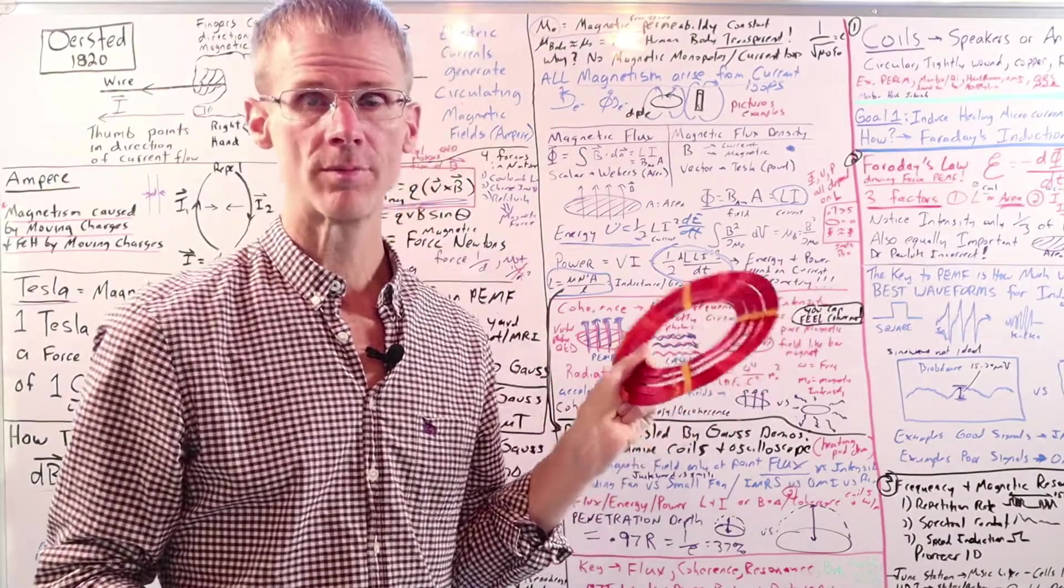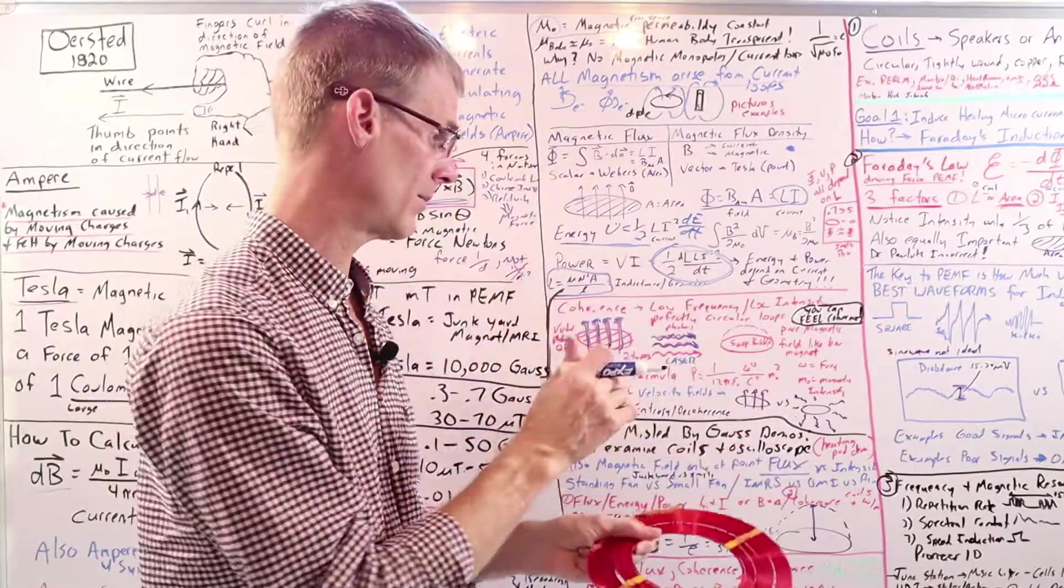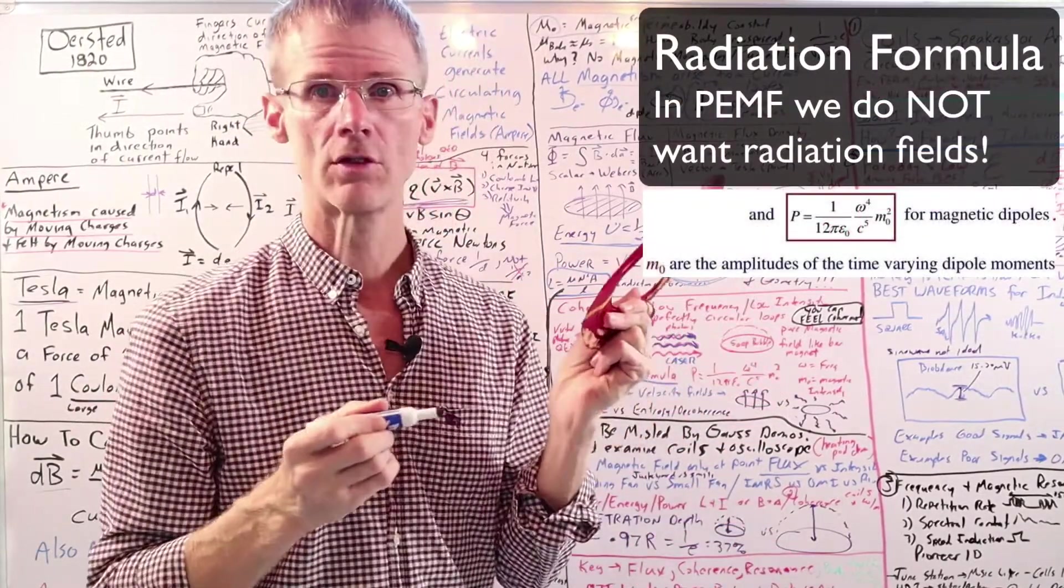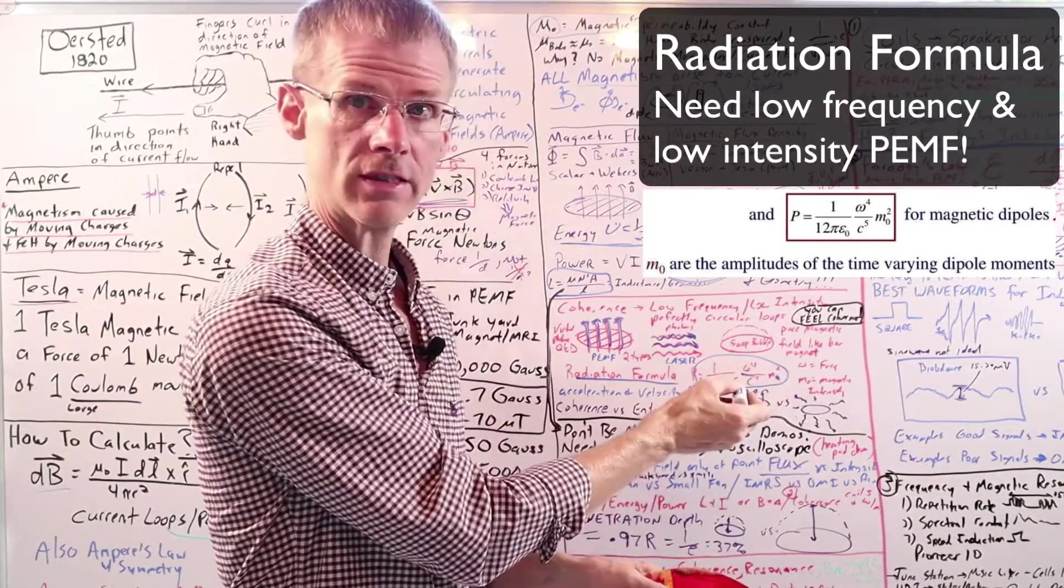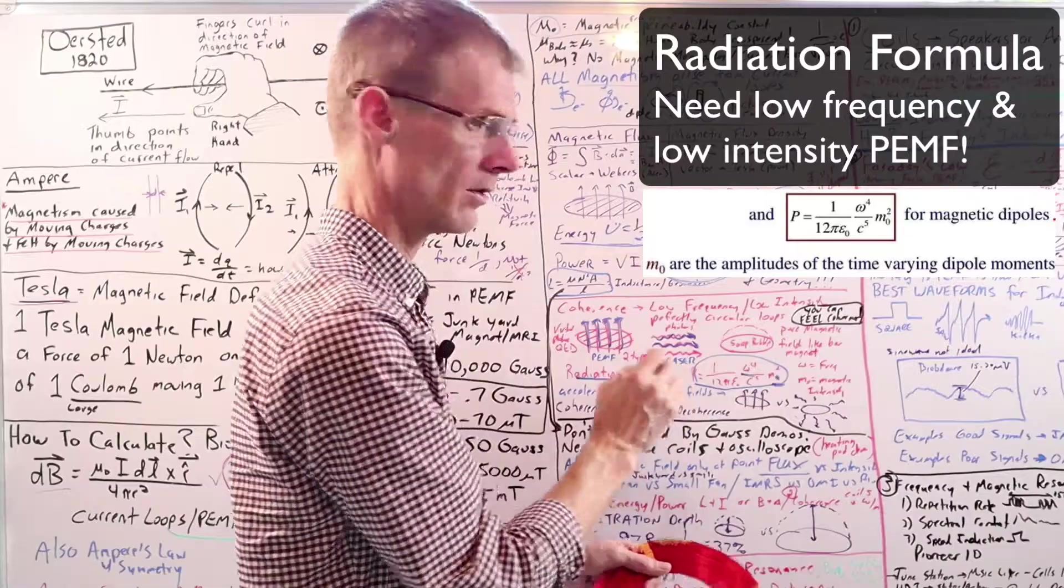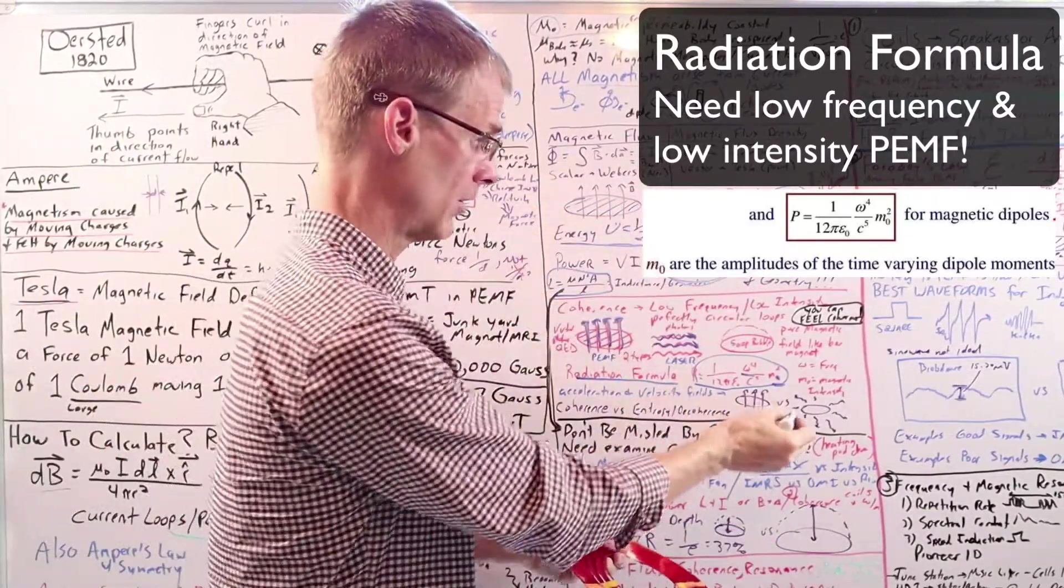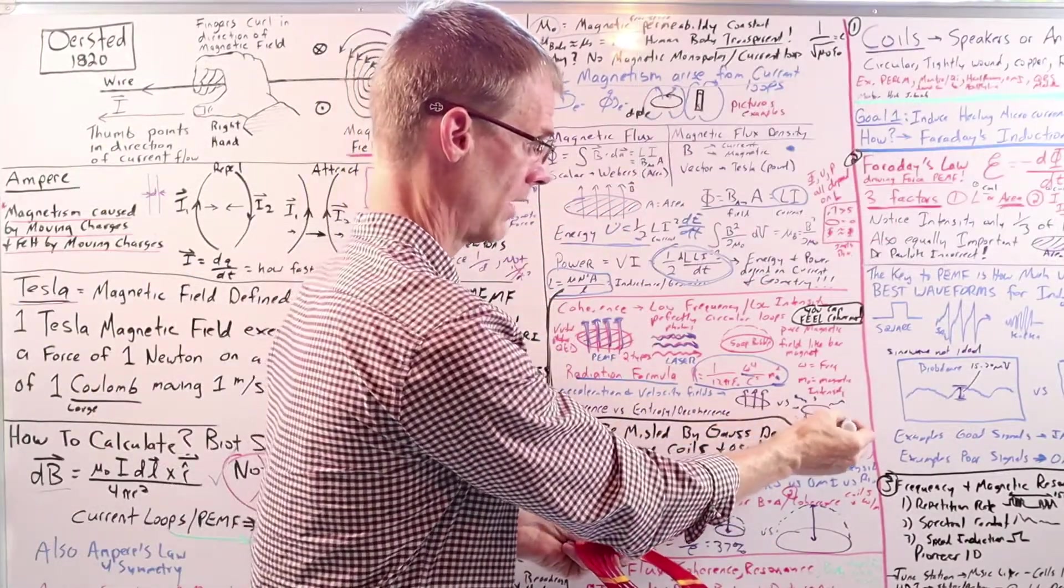Now to create a coherent field besides perfectly circular loops, you want to make sure, and this comes from the radiation formula, that you're using low intensity, low frequency PEMF. So if the frequency is high or the intensity is high, you end up with the fields radiating away. And that's incoherent energy going in all directions. You don't want that.